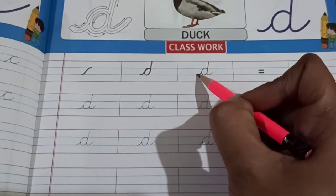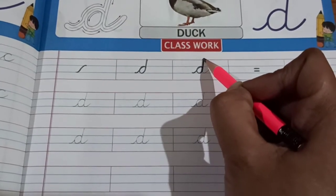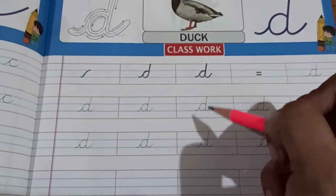Next step is slanting curve, join that curve, go towards, again come down, it's like one small tail.